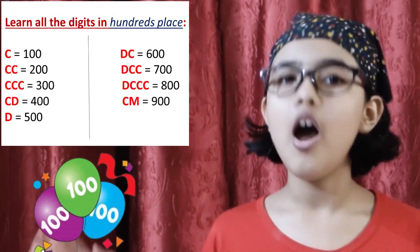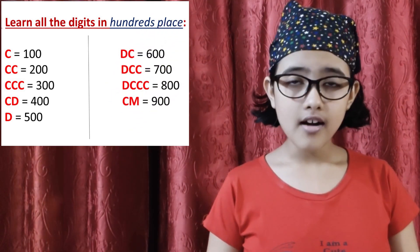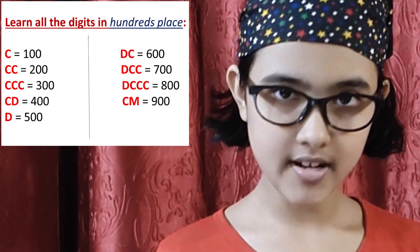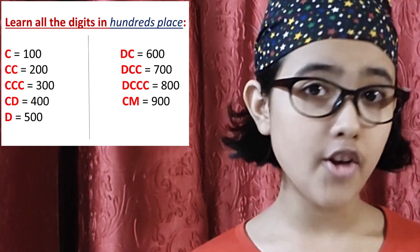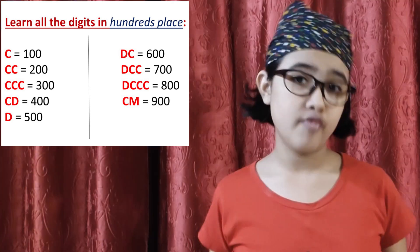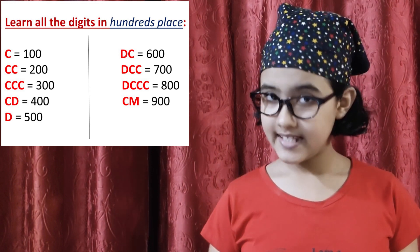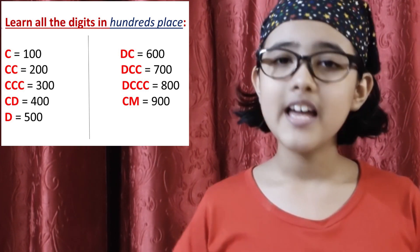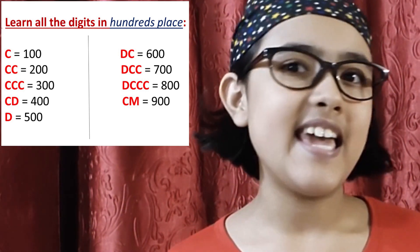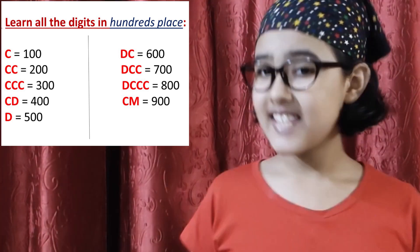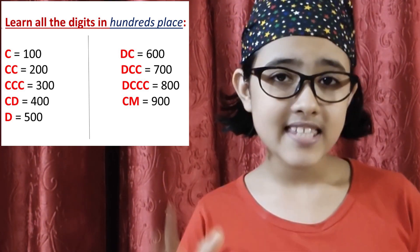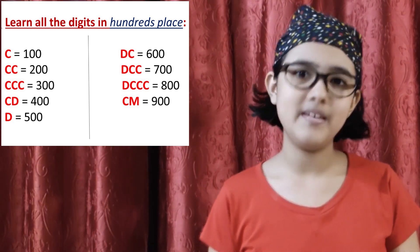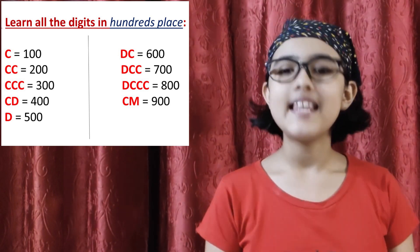Let's go ahead with the hundreds place. C is 100, CC is 200, CCC is 300, CD is 400, D is 500, DC is 600, DCC is 700, DCCC is 800, and CM is 900.